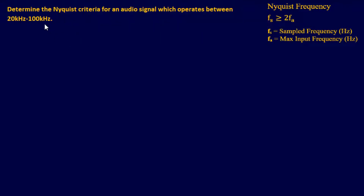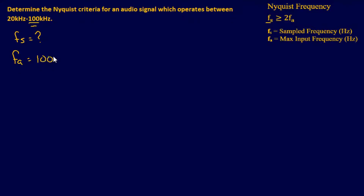We're going to start off with what we know and what we're trying to find. What we're trying to find is the Nyquist criteria, which is f of s — the sampling frequency. To find the sampling frequency, we must determine our f of a, our maximum input frequency. We want the maximum input frequency because that's the maximum sampling rate we're going to use for this conversion. If we did 20 kilohertz times 2, it would not be adequate to sample the 100 kilohertz input. So the max input frequency, f of a, would be 100 kilohertz. You always use the highest value in the range when determining your Nyquist frequency.